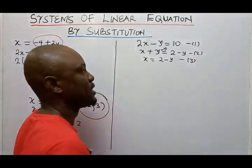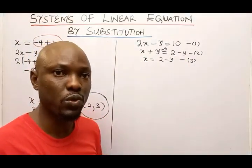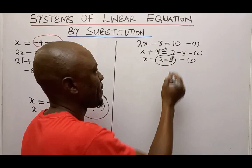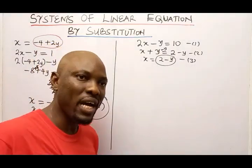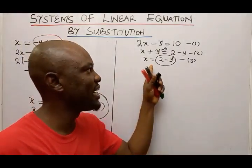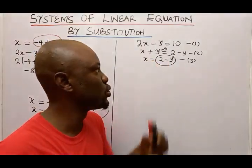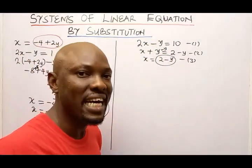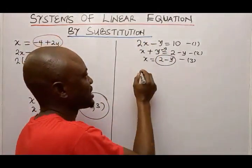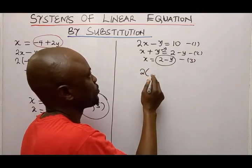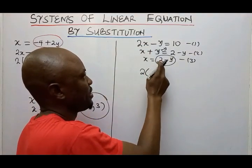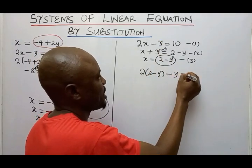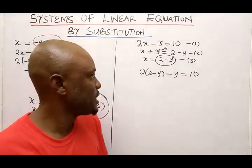Now the X value is 2 minus Y. I want to plug in that X value into equation 1 — that is the substitution step. If I do that, I'll have 2 times bracket 2 minus Y, then minus Y equals 10.